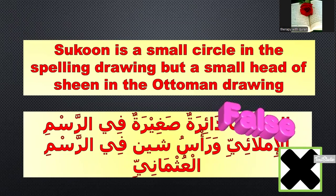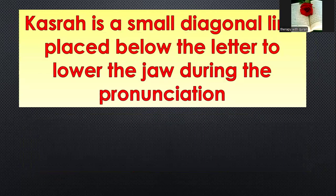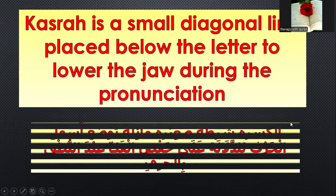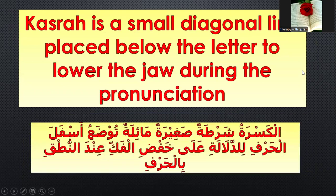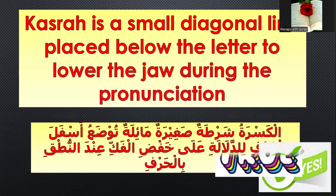Number three: Kasra is a small diagonal line placed below the letter, indicating the mouth is partially closed during the pronunciation. True or false? Yes, it's true.